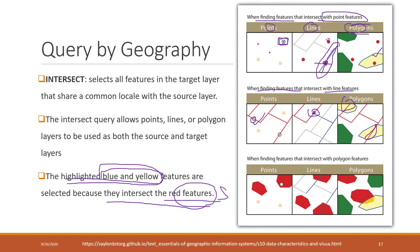Finally, we can also use a polygon to intersect with other features. A point is intersecting with red polygons because the point is inside those polygons. Two lines touch those polygons, so those will be selected. We can also have polygon intersecting with polygon — if they share a common area, those polygons are selected. That is how intersect works.